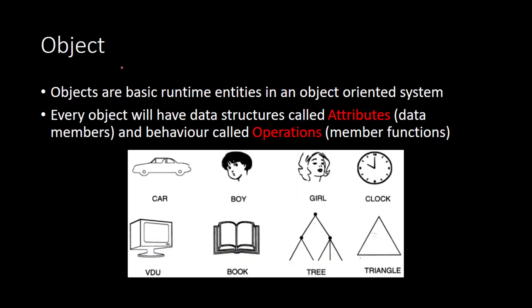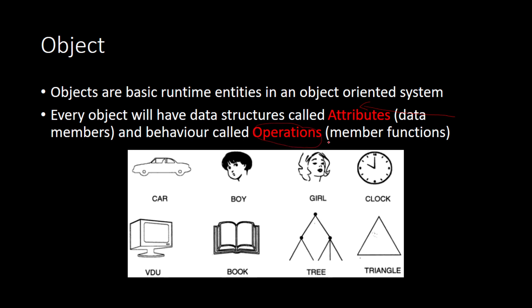What do we mean by an object? Objects are real runtime entities that are around us. Whatever is around you can be called an object, as long as it has its own properties — which we technically call attributes — and with those properties we can perform operations or functionalities.